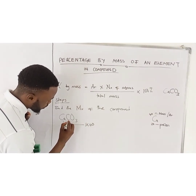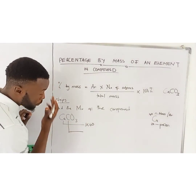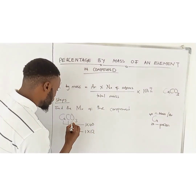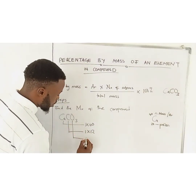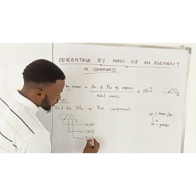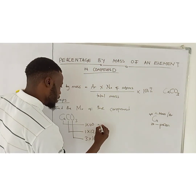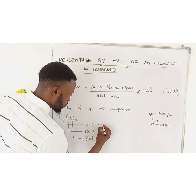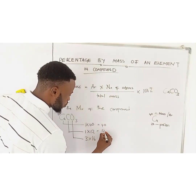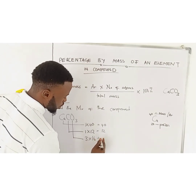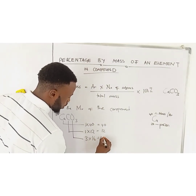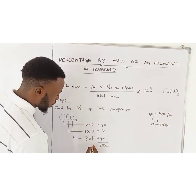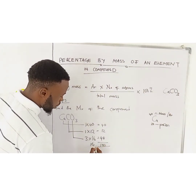Now we come here. What is the mass number of calcium? How many calciums are present? You've got one — mass number is 40. Carbon: there is one, mass number 12. Oxygen: there are three, mass number 16 — so 3 × 16 = 48. If you add this up: 40 + 12 + 48, you are going to get 100 as your MR.